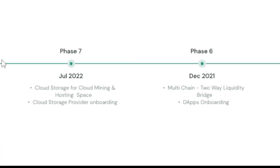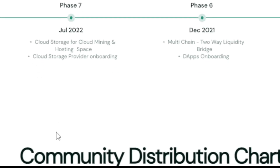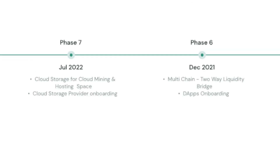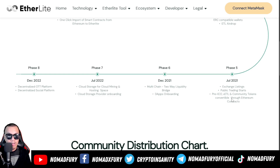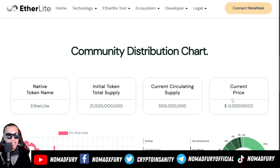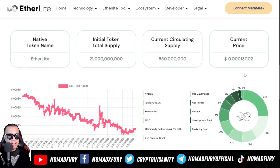Here's the roadmap we have right now for EtherLight. As of this time we're currently in Phase 7, where we're expecting cloud storage for cloud mining and hosting space, a cloud storage provider that is onboarding, and what we're expecting in December of this year: a decentralized OTT platform and a decentralized social platform.